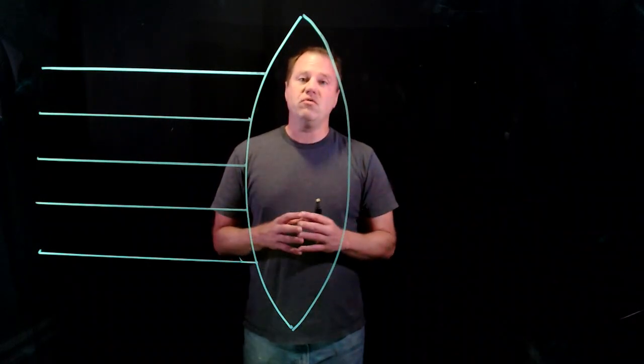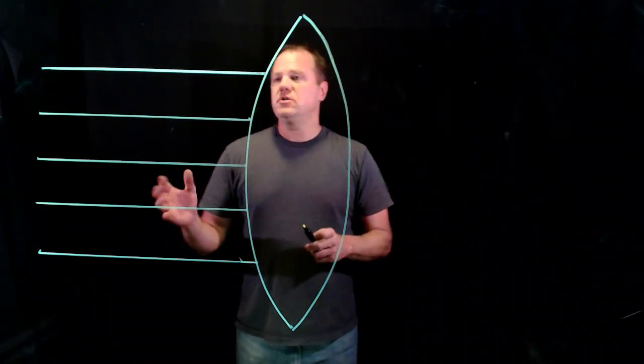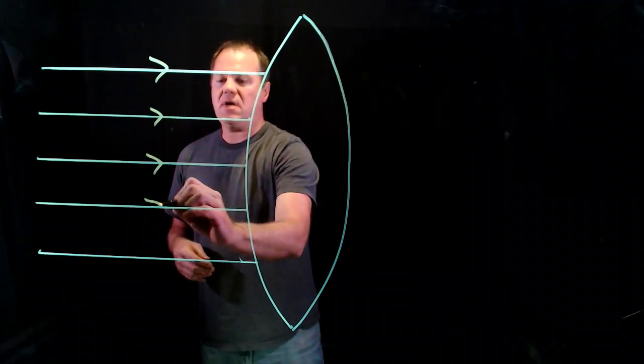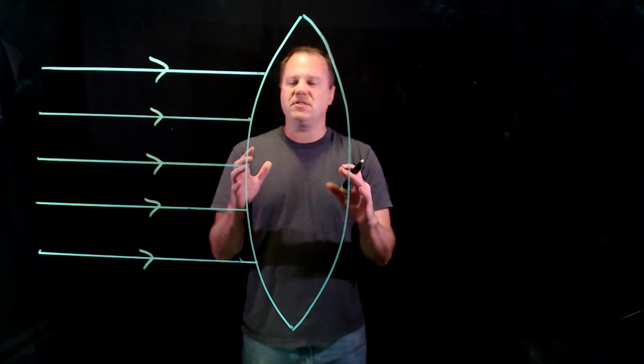Hi, I'm going to show you how a biconvex or also called a converging lens works. So let's say we have five parallel light rays coming in and hitting this biconvex lens.